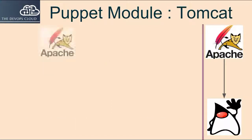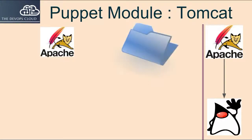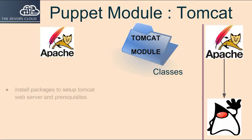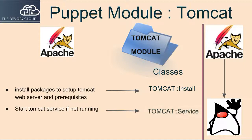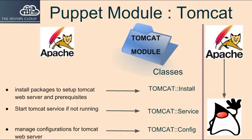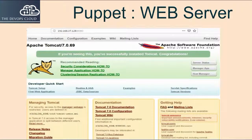Similarly for Tomcat, first we will create a class for Tomcat package installation. Next we will create a service class to start the Tomcat service if not running. Next we will create a config class to manage the Tomcat configuration file. As a result, when you apply the classes on any node you should get a Tomcat web page running on your IP address on port 8080.